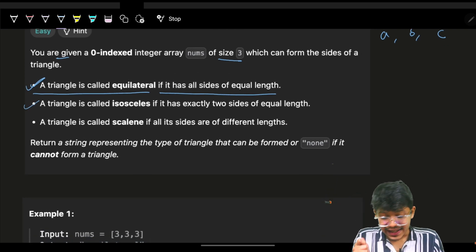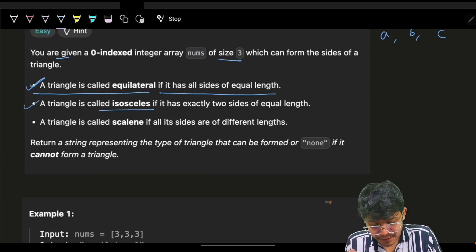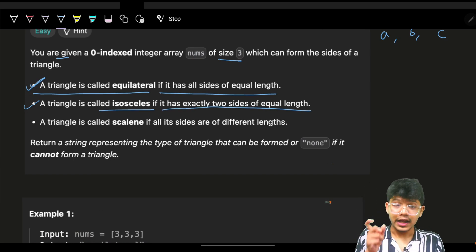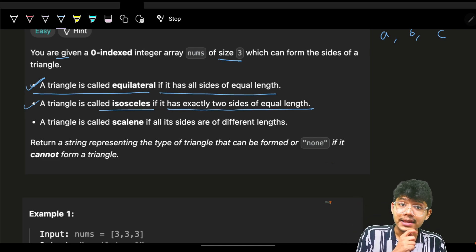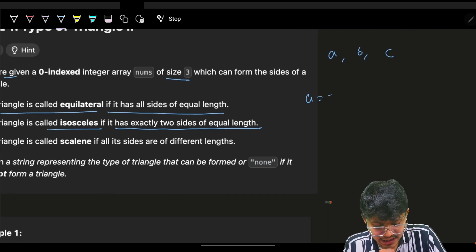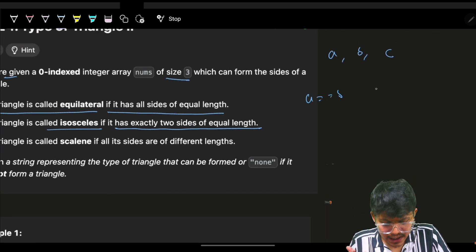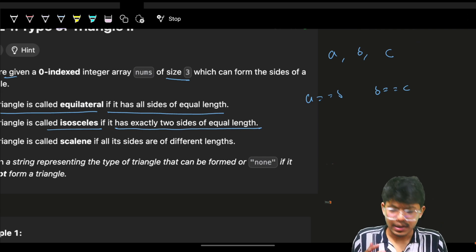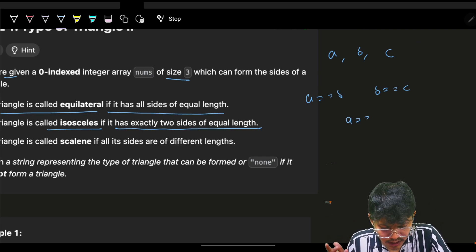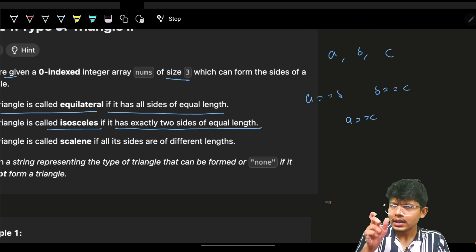Now a triangle is called isosceles if exactly two sides of equivalent. I will have exactly two sides of equivalent, which means A is equals to B, or I can say my B is equals to my C. Then I can say it is actually isosceles triangle. But Aryan, what about A equal to C? Yeah, this is also possible.